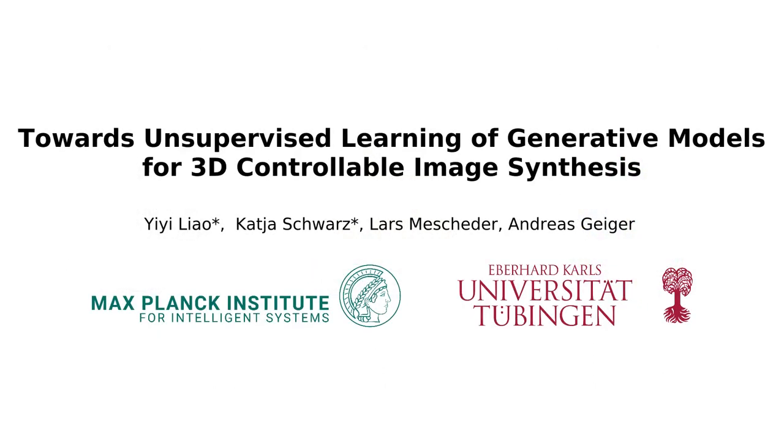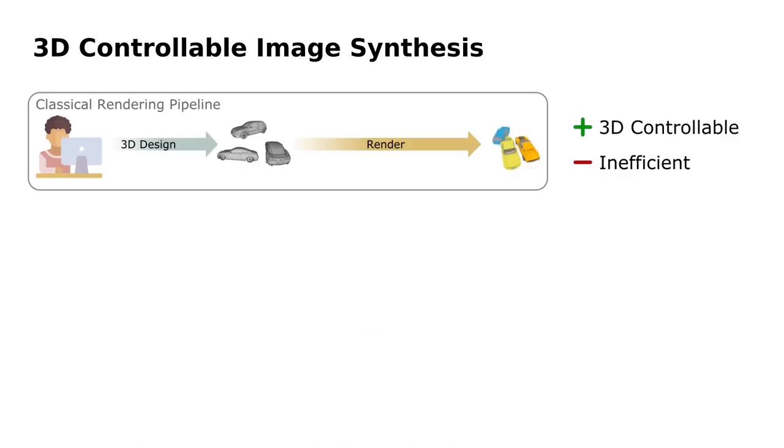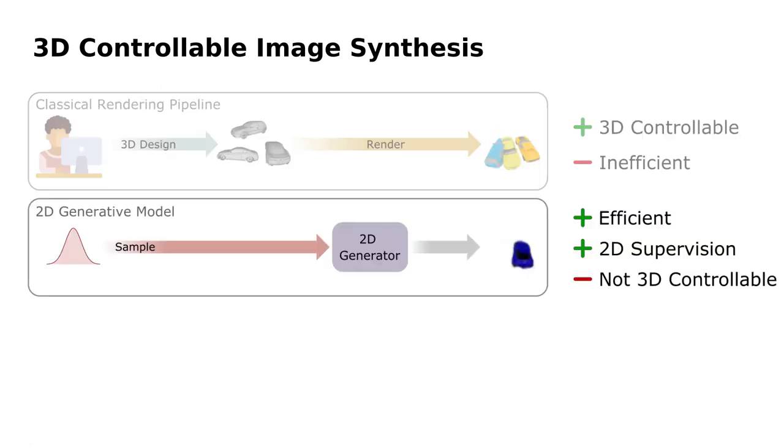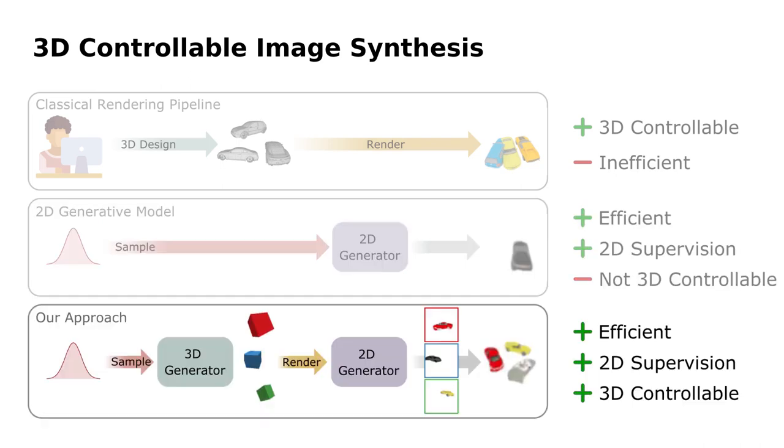Hi, I'm Katja. I'm presenting our work Towards Unsupervised Learning of Generative Models for 3D Controllable Image Synthesis. Classical rendering is fully 3D controllable, but it is inefficient and expensive to manually create 3D models. In contrast, 2D generative models are efficient and can be learned from 2D images only, but they are not 3D controllable.